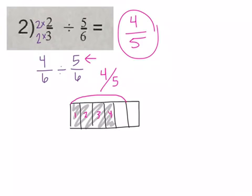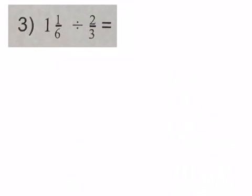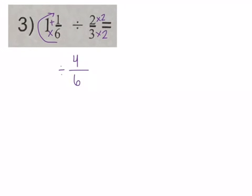Let's try another problem. Step one: give common denominators and make sure both look like fractions. I need to make the mixed number into an improper fraction. I have sixths and thirds, so I'll change the thirds into sixths by multiplying by two. Over here I now have four sixths, and for the mixed number I'll do my cartwheel: six times one is six, plus one is seven — so seven over six.